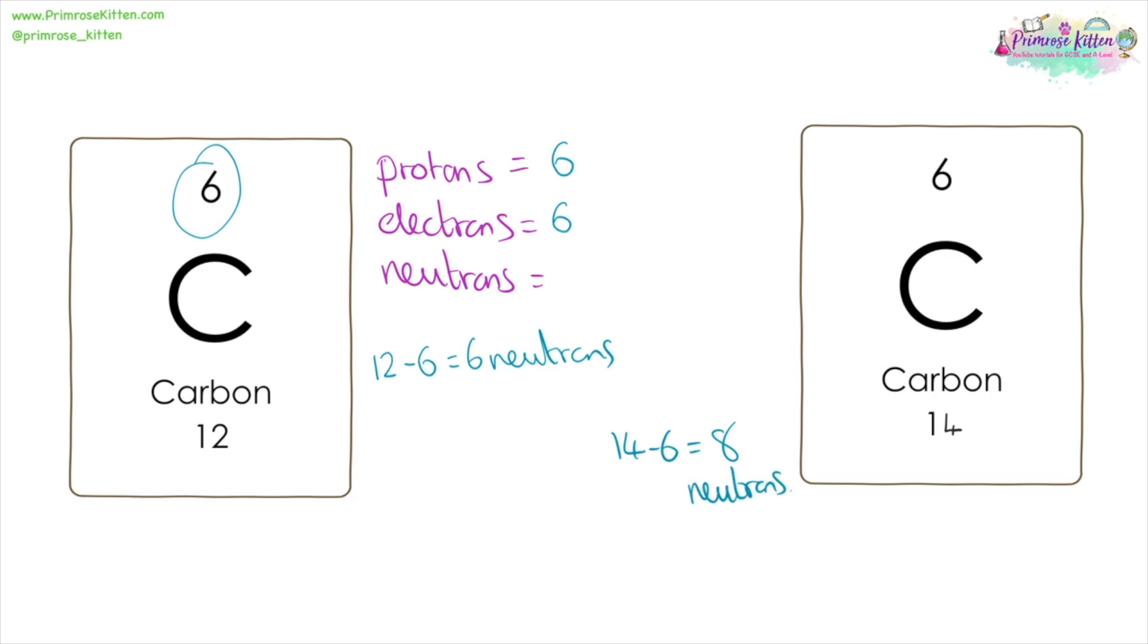So an isotope is something that has the same number of protons, but a different number of neutrons. And a proton is what identifies the identity of an atom.